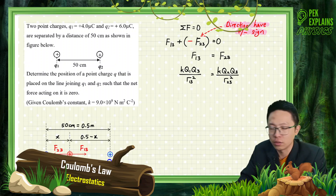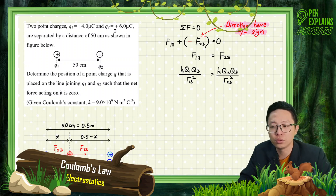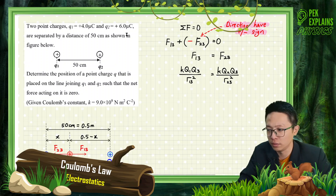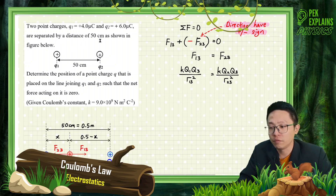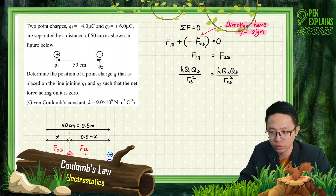Let us look at this question on Coulomb's law. Two point charges Q1 and Q2: Q1 is positive 4 microcoulombs and Q2 positive 6 microcoulombs, are separated by a distance of 50 cm as shown in the figure below. So you have two point charges here, Q1 and Q2.